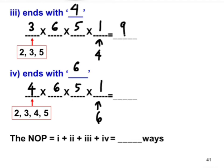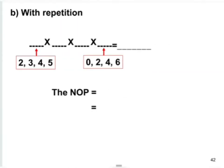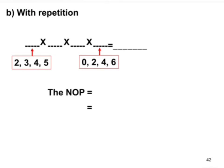So the totals are 120, 90, 90, and 120. The number of permutations is found by adding all four cases together, giving 420 ways. This is the answer when digits cannot be repeated.